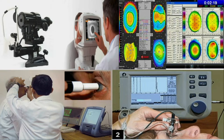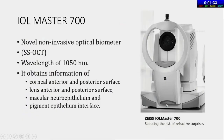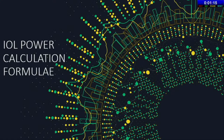Can you identify all the instruments shown? They include an automated keratometer, a pentacam, a contact A-scan, and an immersion A-scan. The newest instrument is the ALMASTER 700 - a novel non-invasive optical biometer with a wavelength of 1050 nanometers. It can capture information on the corneal anterior and posterior surfaces, lens anterior and posterior surfaces, macular neuroepithelium, and the retinal pigment epithelium interface.